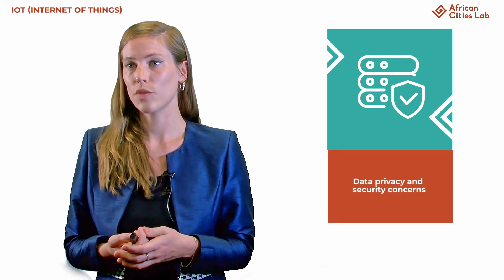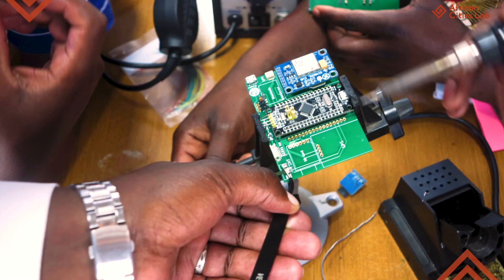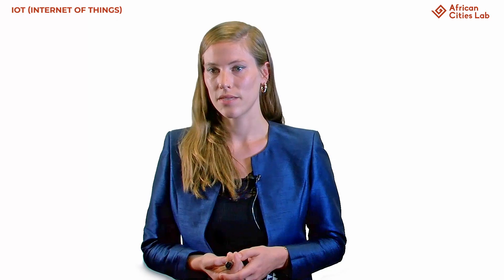IoT still has issues around data privacy and security that have to be addressed, and it is up to local governments to address these in their digital human rights strategies. For example, Nairobi, Kenya, has been affected by high levels of pollution due to traffic congestion, industrial emissions and open burning of waste. In 2019, a pilot project was launched to install air quality sensors on public buses. That data was transmitted in real time to a central database to inform decisions on air quality management — an innovative approach with the potential to support evidence-based policymaking and improve citizens' health and well-being.